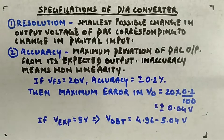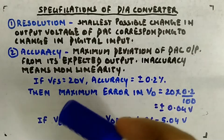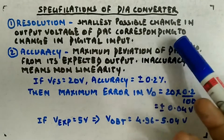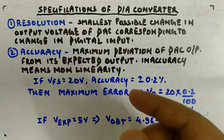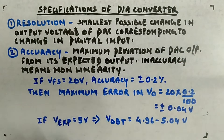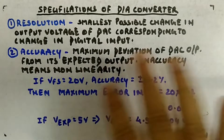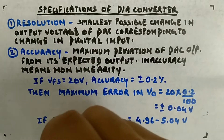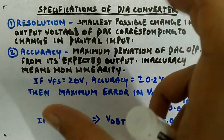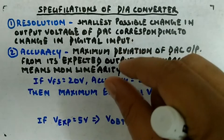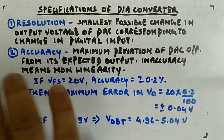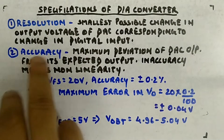The first specification is resolution. Resolution will be given in the datasheet for a particular digital-to-analog converter. You are already aware that it is the smallest possible change in the output voltage of the DAC corresponding to a change in the digital input — the step size and resolution are the same thing. As you increase the number of steps, while keeping the full-scale and starting voltages the same, the resolution has to be less. You can picture this with the staircase diagram.